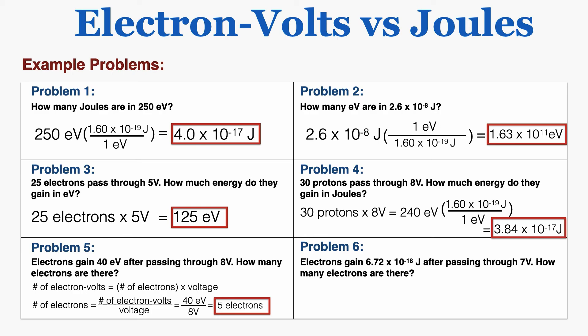Problem six says electrons gain 6.72 times 10 to the negative 18th joules after passing through 7 volts — how many electrons are there? I use the same equation as problem five, but first I need to convert joules to electron volts. Multiplying by 1 electron volt over 1.6 times 10 to the negative 19th joules gives 42 electron volts. Dividing by 7 volts gives 6 electrons.